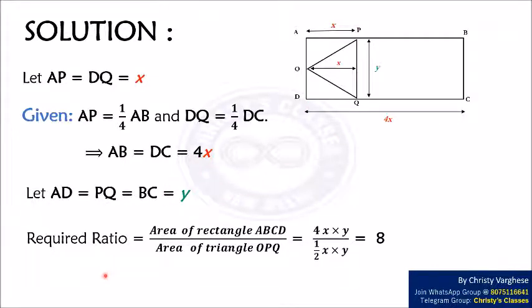The required ratio is the area of rectangle ABCD to the area of triangle OPQ. The area of a rectangle is given by length times breadth. Here the rectangle ABCD has length 4X and breadth Y. Therefore the area of rectangle ABCD is 4XY.